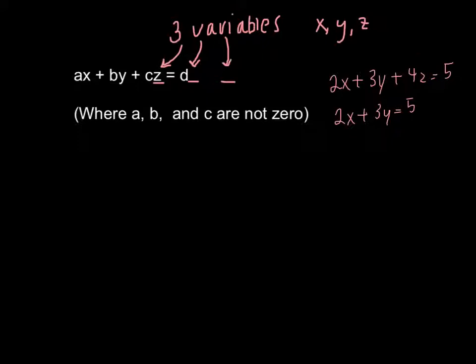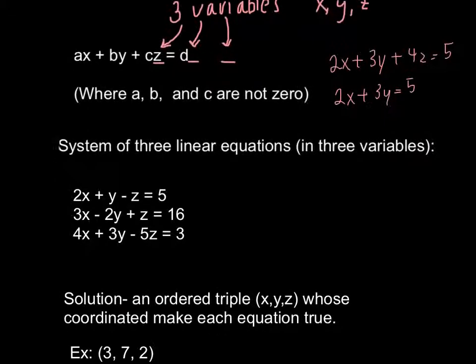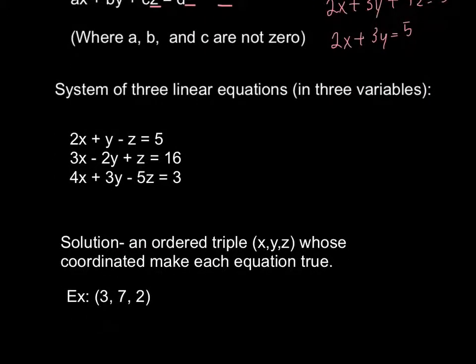A system of three linear equations will be three equations. Like a system of two linear equations, we're trying to find a solution. This solution is an ordered triple, as opposed to an ordered pair which would just be x, y. It's an ordered triple whose coordinates make each equation true. For example, we could have (3, 7, 2) for a system of linear equations.